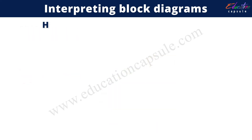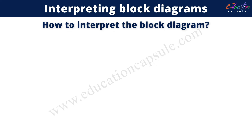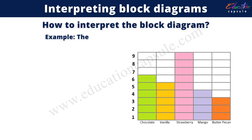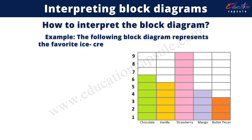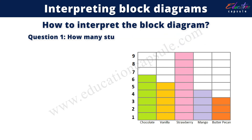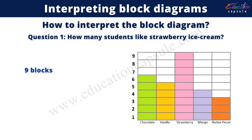Now, how to interpret the block diagram? Example: the following block diagram represents the favorite ice creams of the students of year 2. Question: how many students like strawberry ice cream? Since there are 9 blocks and 9 blocks is equal to 9 students, so we can say that 9 students like strawberry ice cream.